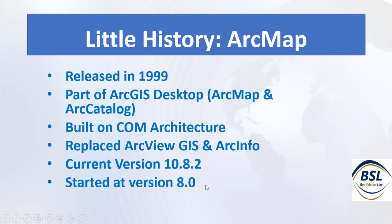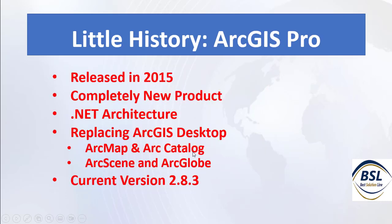Now for ArcGIS Pro — it was released in 2015 and is a completely new product. Its architecture is .NET. It replaces ArcGIS Desktop, meaning ArcMap, Arc Catalog, ArcScene, and ArcGlobe are all replaced by ArcGIS Pro, as all these products are included within it. The current version is 2.8.3.